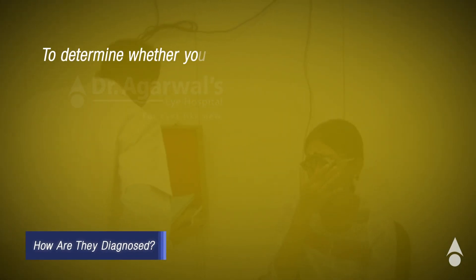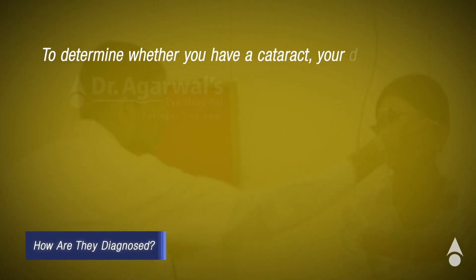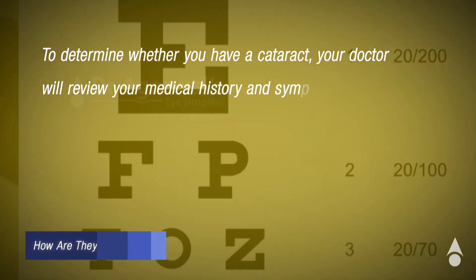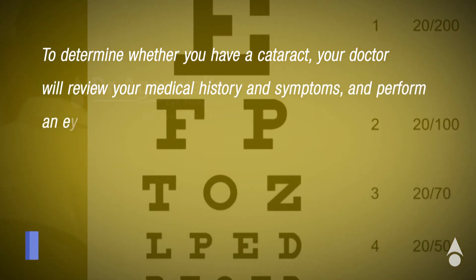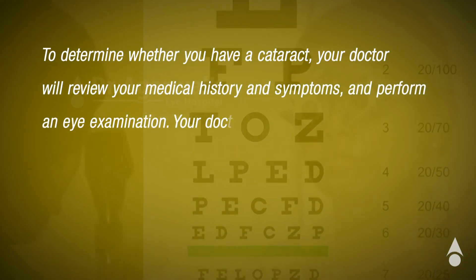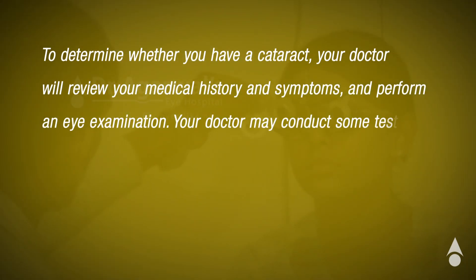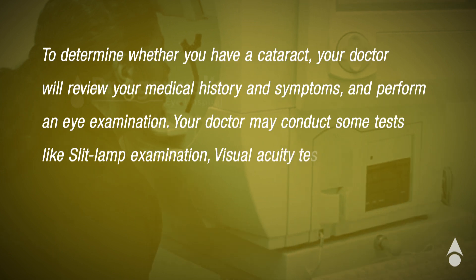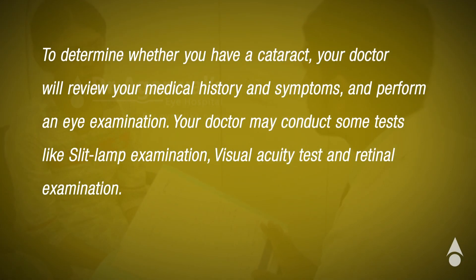To determine whether you have cataract, your doctor will review your medical history and symptoms and perform an eye examination. Your doctor may conduct some tests like slit lamp examination, visual acuity test, and retinal examination.